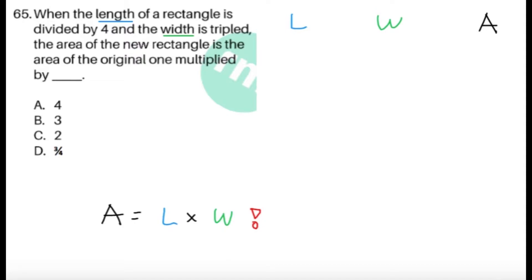When the length of a rectangle is divided by 4 and the width is tripled, the area of the new rectangle is the area of the original one multiplied by — and we have 4 choices. We have variables given because the length and the width are not given. So we'll use the trick: we can substitute values for L and W since the answer is going to be numerical anyway. Let's just have a nice value for the length — let's say 4 — and then let's make the width 2.